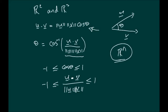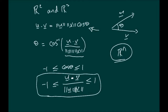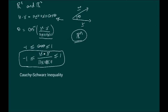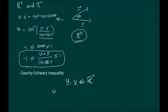This is where the Cauchy-Schwarz inequality steps in. The Cauchy-Schwarz inequality states that for any u and v that belong to Rn, the absolute value of the dot product of u and v is less than or equal to the norm of u times the norm of v. That's the statement of the Cauchy-Schwarz. We state the Cauchy-Schwarz inequality here without proof; we will prove it a little later when we come to general vector spaces.